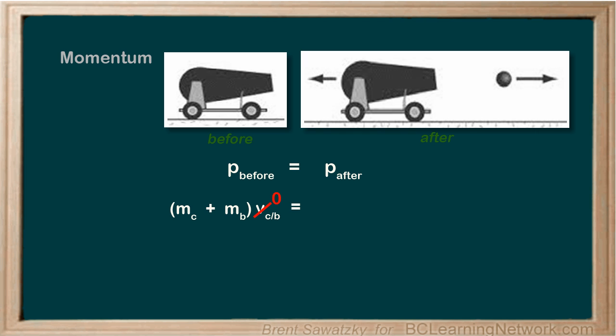For the cannon, let's call it Mc Vc, the C for cannon, and Mb Vb for the ball. Now there's lots of velocity happening after the explosion. The ball is traveling at a high speed to the right here and the cannon itself is recoiling by moving a little to the left. So how is this going to equal zero?